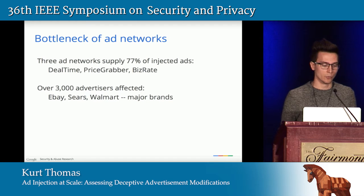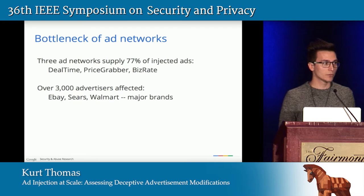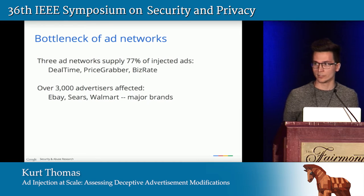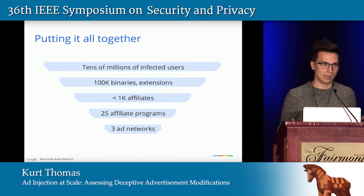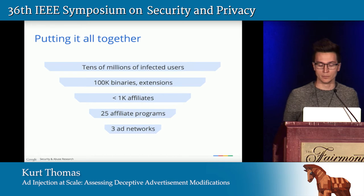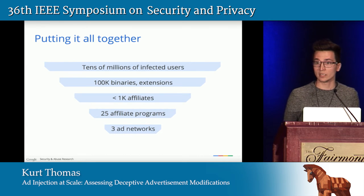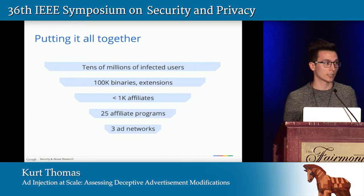From all click chains enumerated, just three ad networks — Dealtime, Price Grabber, and Biz Rate — were supplying 77% of all advertisements. These three then fan out to a larger set of ad networks, reaching about 3,000 advertisers affected in our small sample, including major brands like eBay, Sears, and Walmart. Taking a step back, this gives a holistic funnel: tens of millions of affected users, ~100,000 binaries and extensions, ~1,000 affiliates, 25 affiliate programs like Superfish and Jolly Wallet, and ultimately only three advertising networks supplying the majority of all ads.